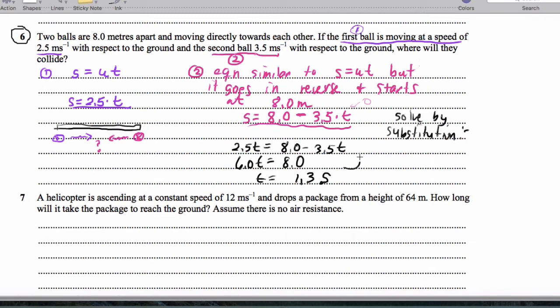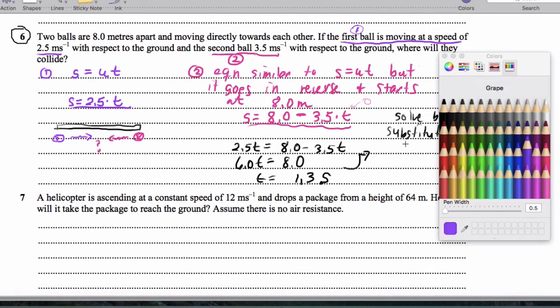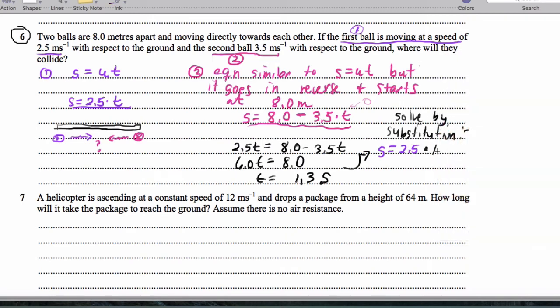And then I can substitute that back into my s formula, so s is 2.5 times the 1.3 that we have here. And when we actually solve that, we get that 2.5 times 1.3 is 3.3, so they meet at the 3.3 meter mark.